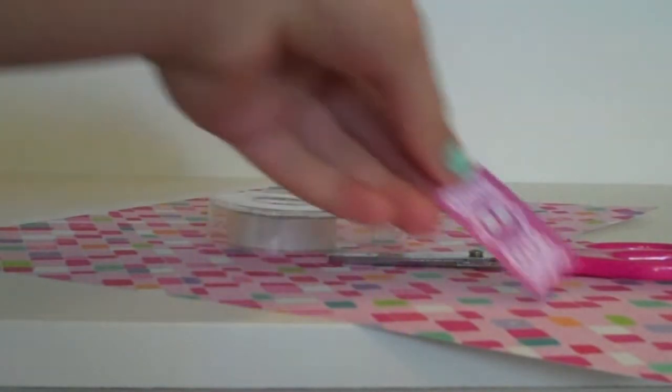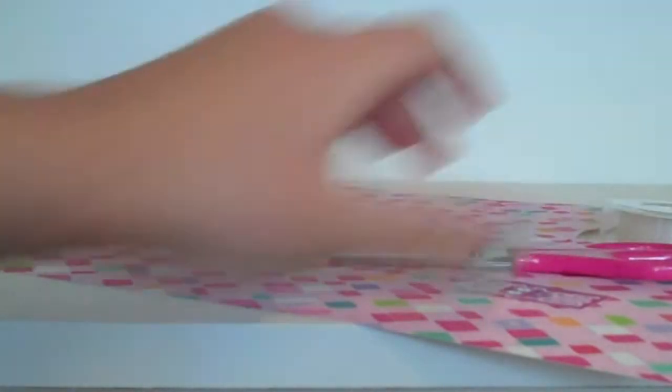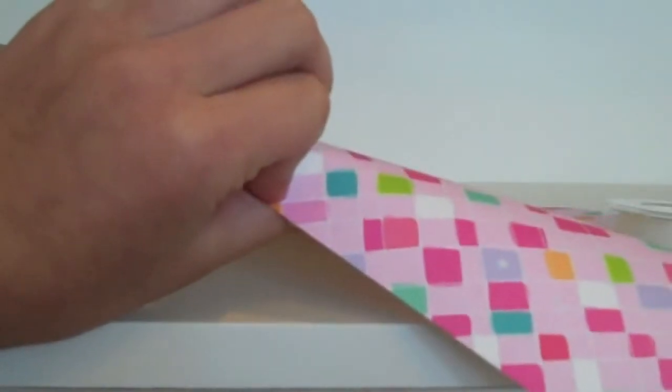A picture to put in the picture frame. Double-sided tape, or I guess you could use stick glue as well. And a piece of paper.